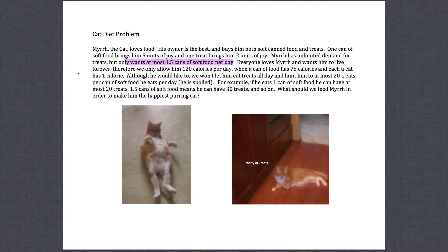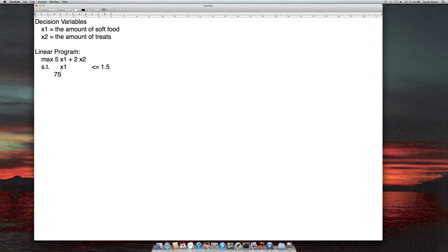Next constraint is the amount of calories he can have. So we say he can have at most 120 calories where a can of soft food is 75 and a treat is one calorie. So to formulate this we say 75 times x1, the amount of soft food, plus 1 essentially times x2, the amount of treats he has, has to be less than or equal to 120. So this is saying if he had one can of soft food he would have 75 calories, if he had one treat it would add 1, so we're limiting this by 120.